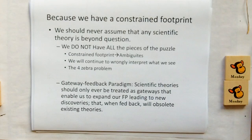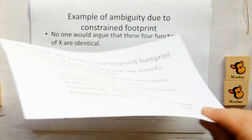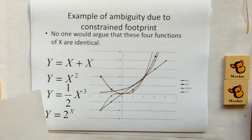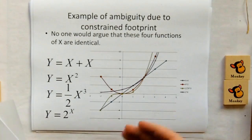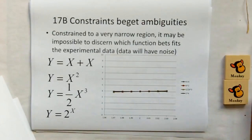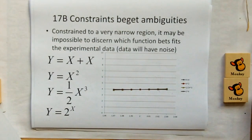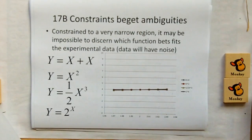We're still going to wrongly interpret what we see — for example, the four-zebra problem. From the gateway feedback paradigm, we discern that scientific theory should only ever be treated as gateways that enable us to expand our footprint, leading to new discoveries that when fed back will hopefully obsolete existing theories — that's scientific progress. Each one of these functions of x are very different, but if you only had a narrow view around x equal 2, they're going to look like they all produce the same answer.